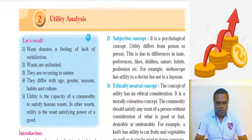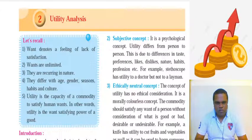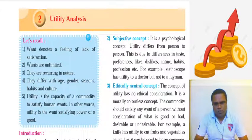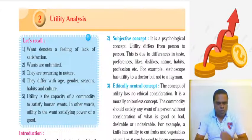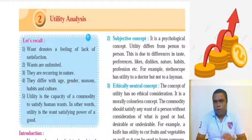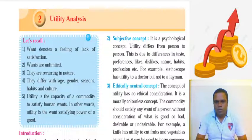In 11th standard, if you all know, we had a topic called utility analysis — it was introduced to you. All these concepts basically start with what is known as human wants. In the first lecture, I told you what exactly is the meaning of economics — that economics basically talks about how people try to satisfy unlimited wants with limited resources. So there was the word 'unlimited wants.' Let's revisit what we heard in the 11th standard.